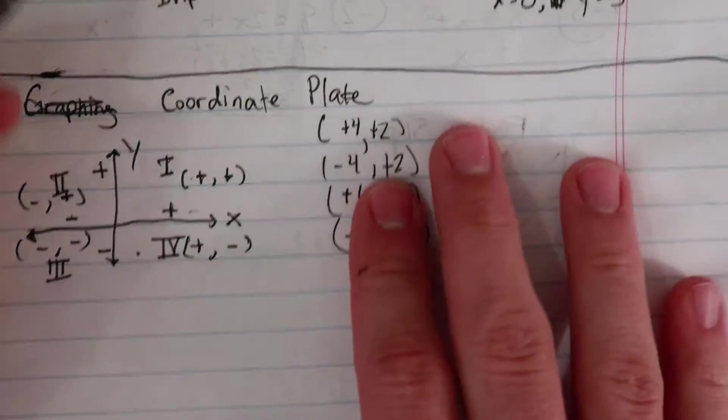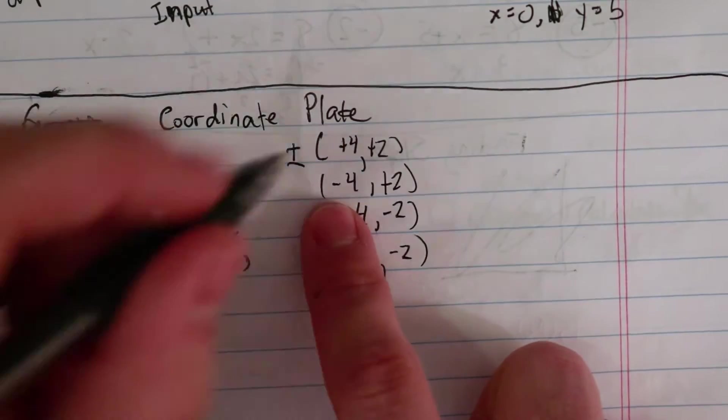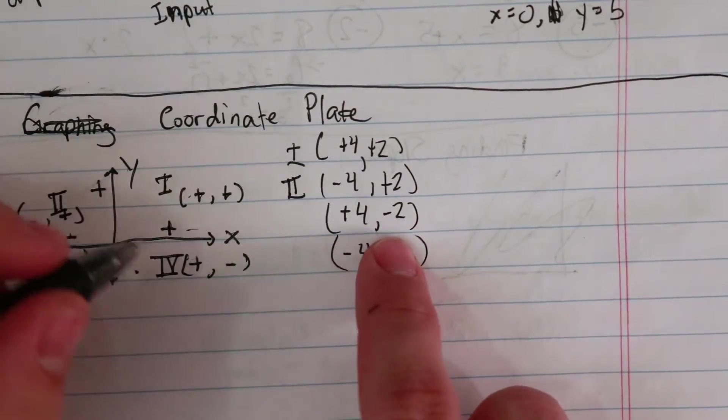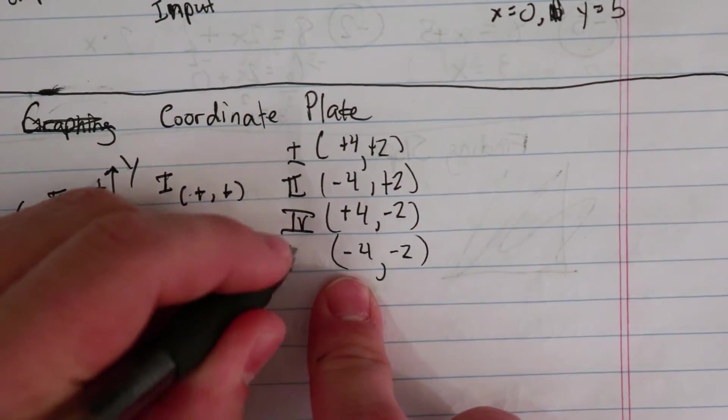So this point with two positive numbers would go in quadrant one. This point, negative number, positive number would go in quadrant two. This number, positive number, negative number would go in quadrant four. And this number, negative, negative would go in quadrant three.